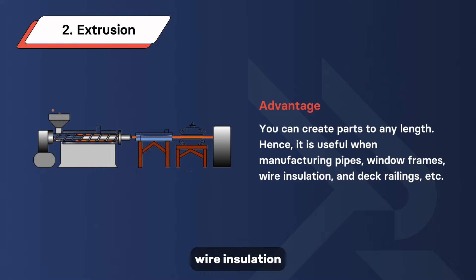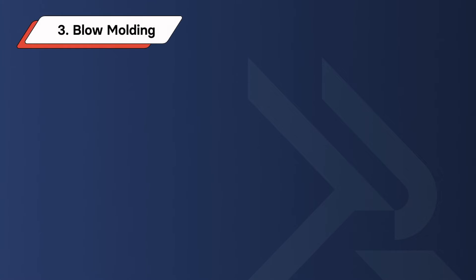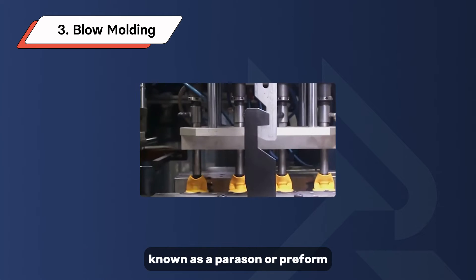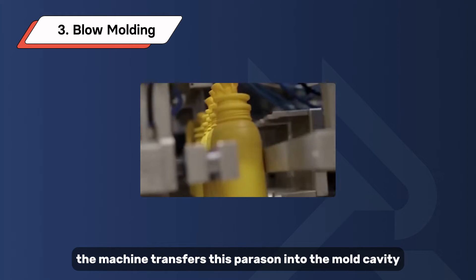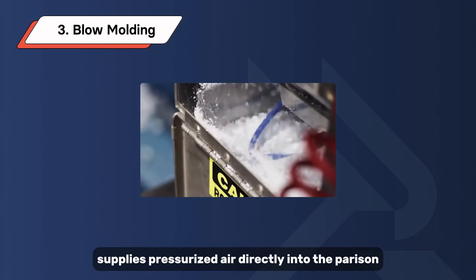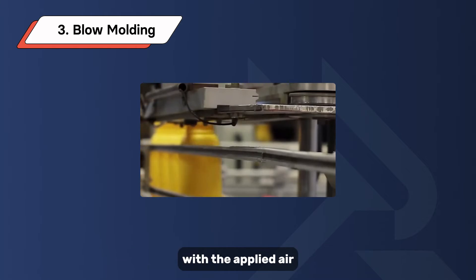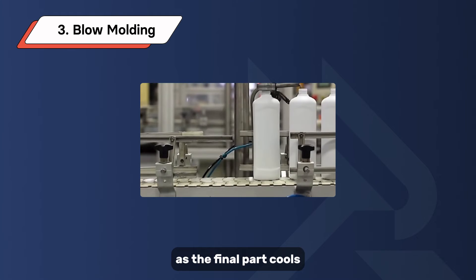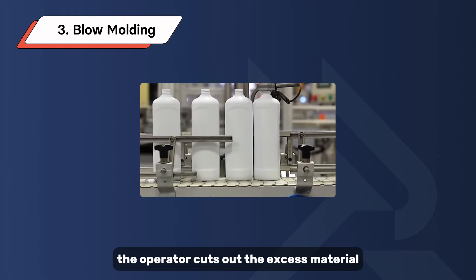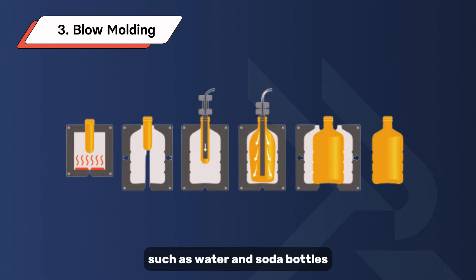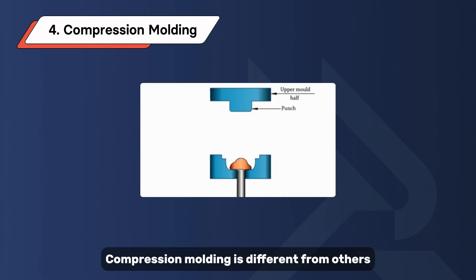Extrusion is useful when manufacturing pipes, window frames, wire insulation, and deck railings. Blow molding works by creating a tube-like plastic known as a parison or preform. The machine transfers this parison into the mold cavity; as the mold closes, a blowing nozzle supplies pressurized air directly into the parison, forcing it to take the shape of the mold. As the final part cools, the operator cuts out the excess material.